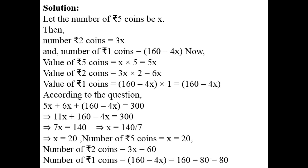300 minus 160 = 140. So, 7x = 140, value of x = 20. Number of 5 rupees coins: x = 20. Number of 2 rupees coins: 3x = 3 multiply 20 = 60. And number of 1 rupees coins: 160 minus 4x = 160 minus 80 = 80. तो अलग-अलग तरह के coins के numbers मिल गए: 20, 60 and 80.